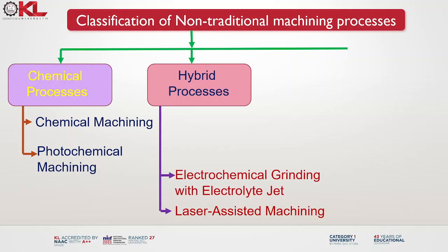Electrochemical grinding with electrolyte jet is a hybrid machining process that combines electrochemical grinding and high-pressure electrolyte jetting. It is used for precision machining of conductive materials, especially those that are difficult to machine using conventional grinding methods. It finds applications in industries such as aerospace, automotive, medical devices and electronics, and is particularly valuable for machining hard and brittle materials or components with complex geometries.